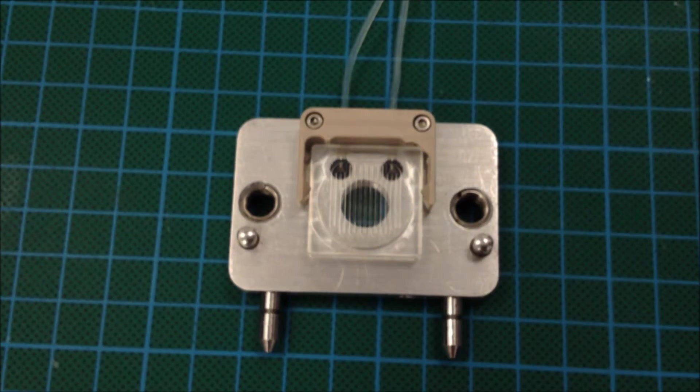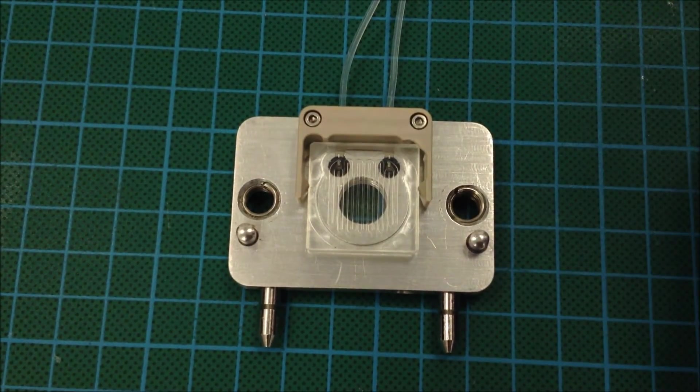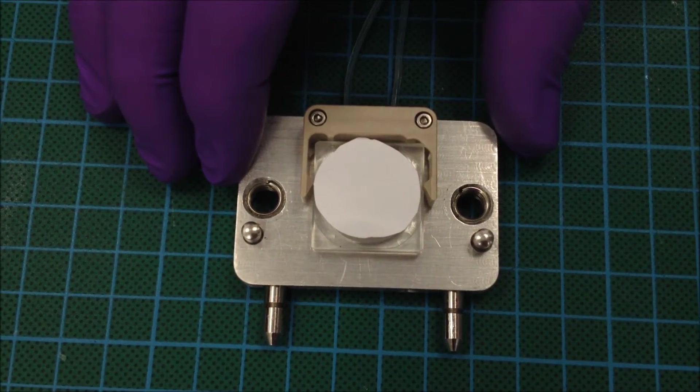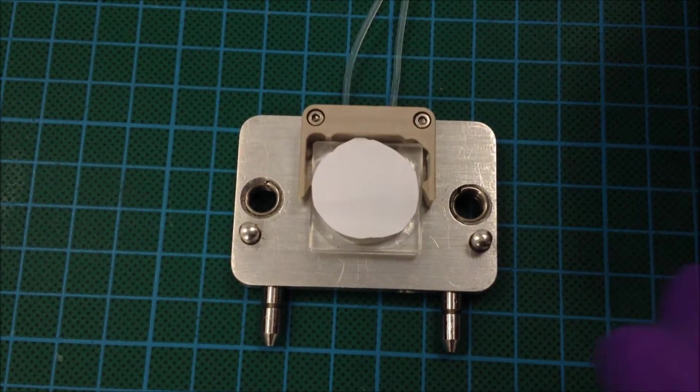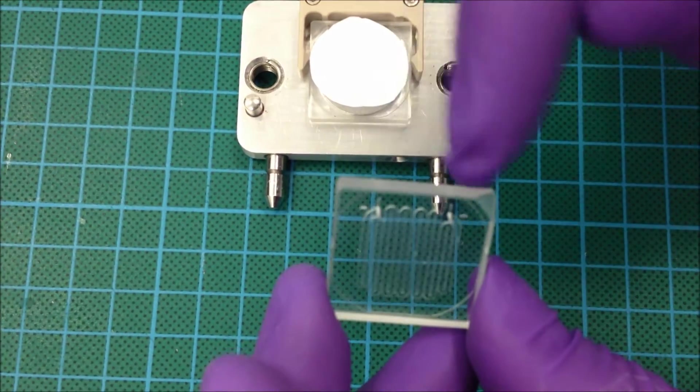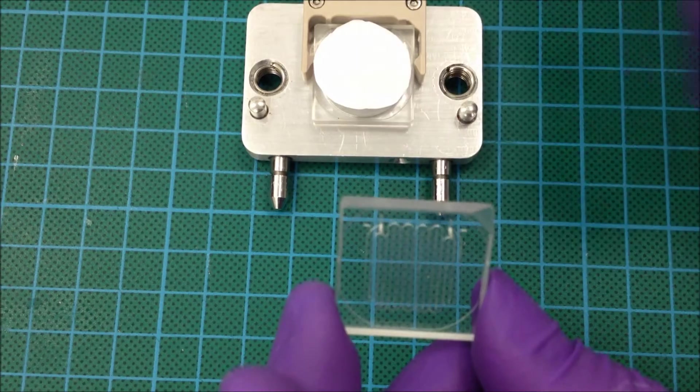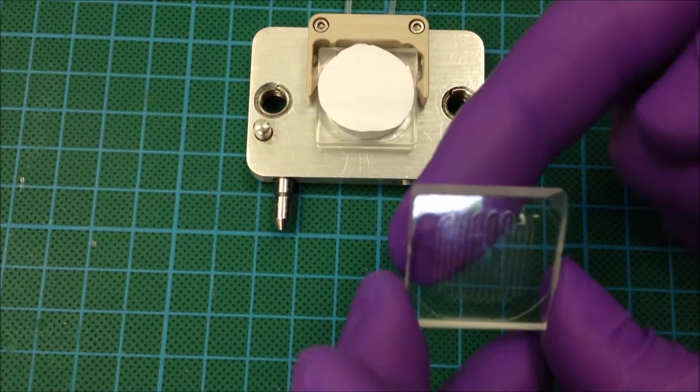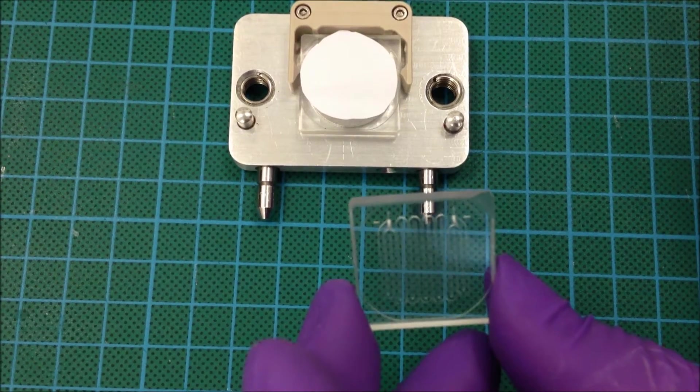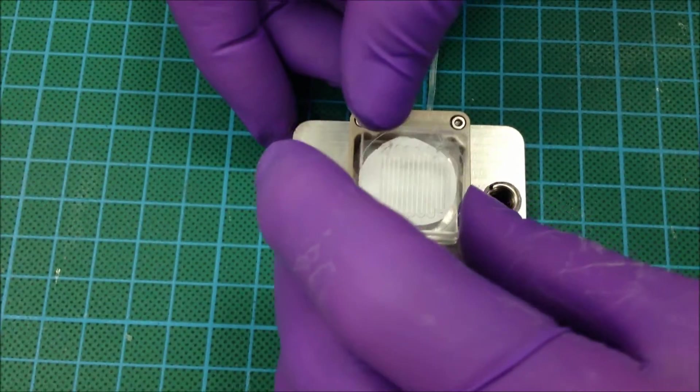You then put your membrane in place like so. And again, having the ports lined up the same way so you have the two holes for the ports in the same orientation as the base chip and with the cut away side again facing away from you.